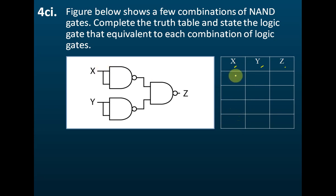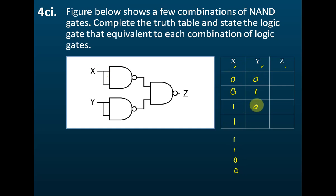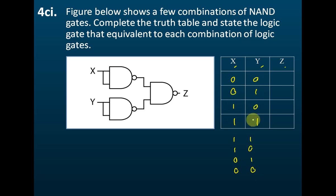Usually the input for the first column is 0, 0, 1, 1. You can also use 1, 1, 0, 0 if you want. The second column is usually 0, 1, 0, 1. You must remember this. You can also use 1, 0, 1, 0 — it's up to you. But usually we use 0, 0, 1, 1 and 0, 1, 0, 1.